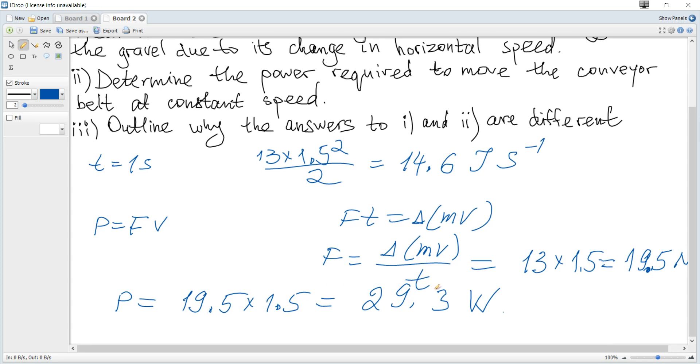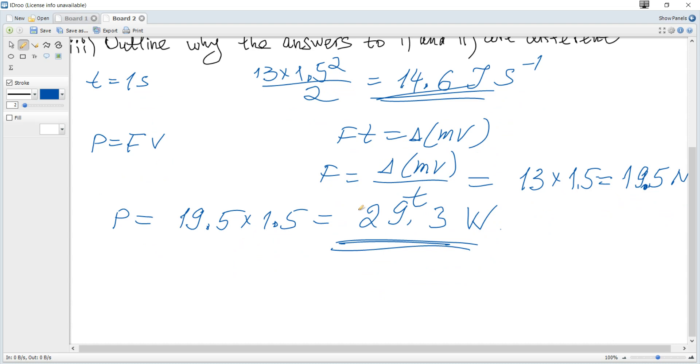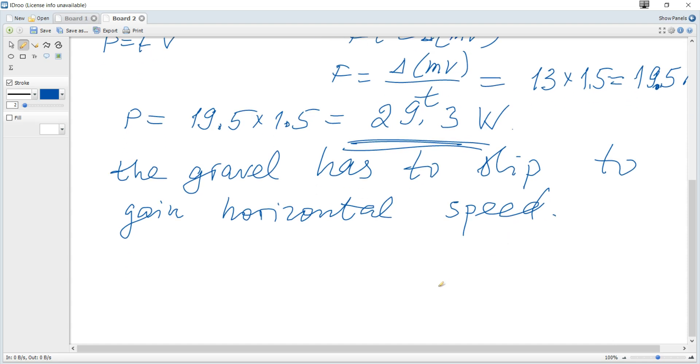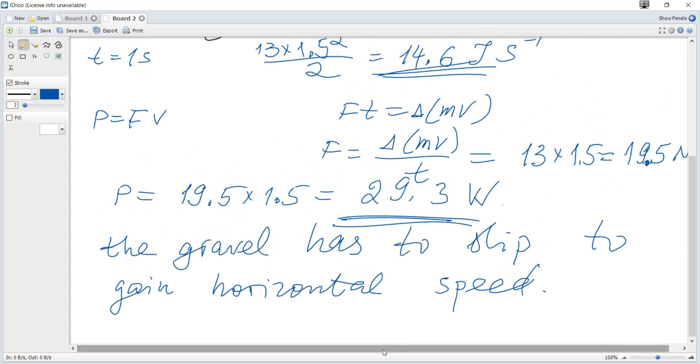Outline why the answers to the previous two questions are different. Total power provided is 29 and useful power is 14. And the question is, why is that difference? The answer is, it's because the gravel has to slip to gain horizontal speed. It means that additional power or energy is required to accelerate gravel through friction at the surface of the belt. And that's all for this question.